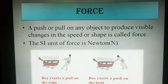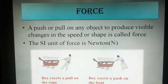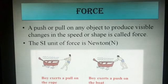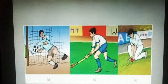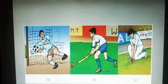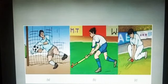Here you can see in the picture a boy exerts a pull on the rope — he is pulling the board towards himself. In the second picture, a boy exerts a push on the boat, applying force towards the water to push the boat in. In the next slide, a goalkeeper saves a goal by applying force with the hands to stop the ball. In figure B, a hockey player flicks a ball by applying force with his hands to the hockey stick. In the third case, a fielder stops the ball by applying force with the hand. These are some examples of where forces come into play.